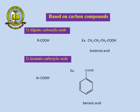The carboxylic acid classification based on carbon compounds classifies them into two types: aliphatic carboxylic acid and aromatic carboxylic acid. In aliphatic carboxylic acid, we have only alkyl groups. In aromatic carboxylic acid, the carboxylic acids are attached to the aromatic benzene ring.